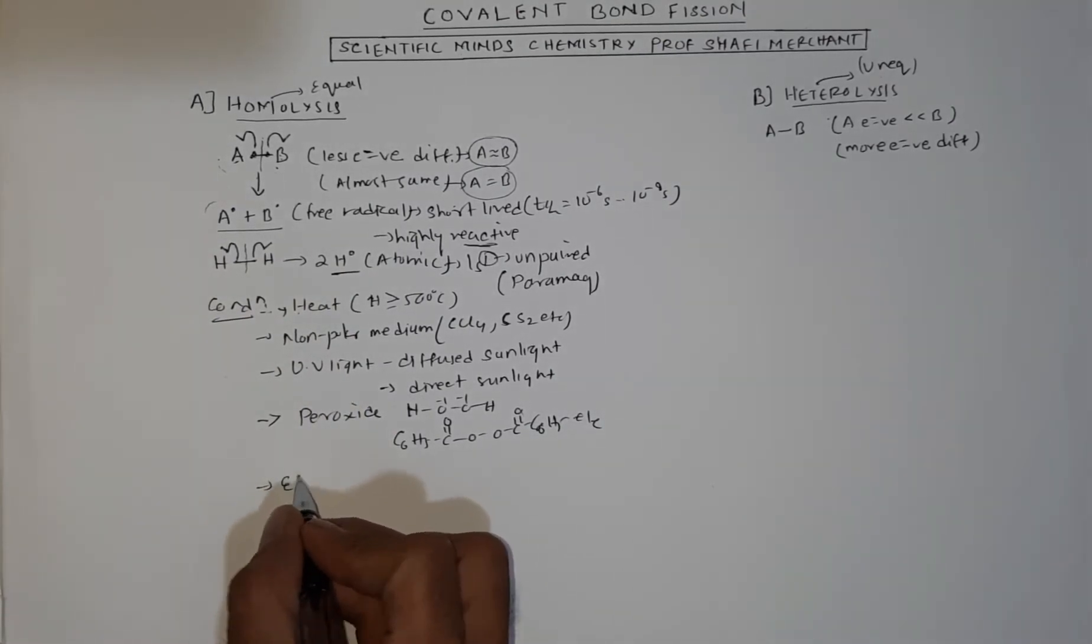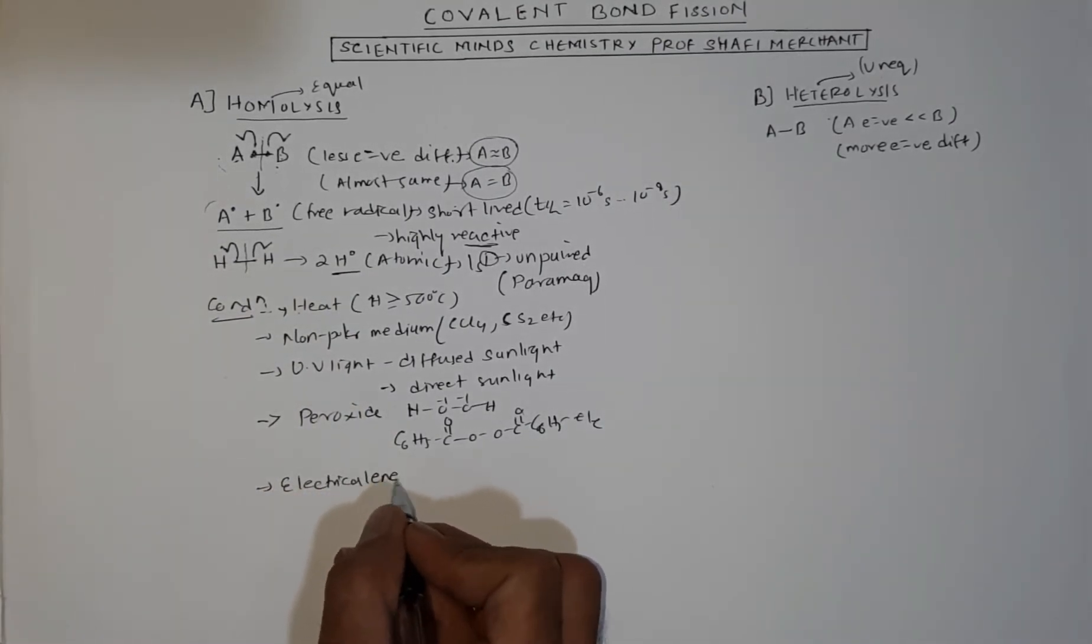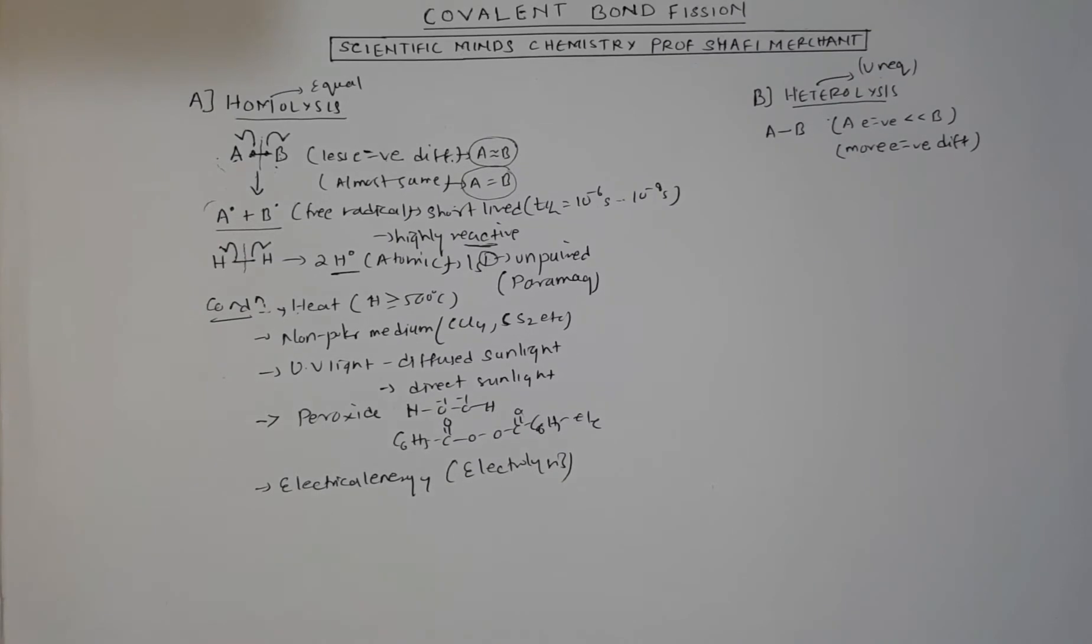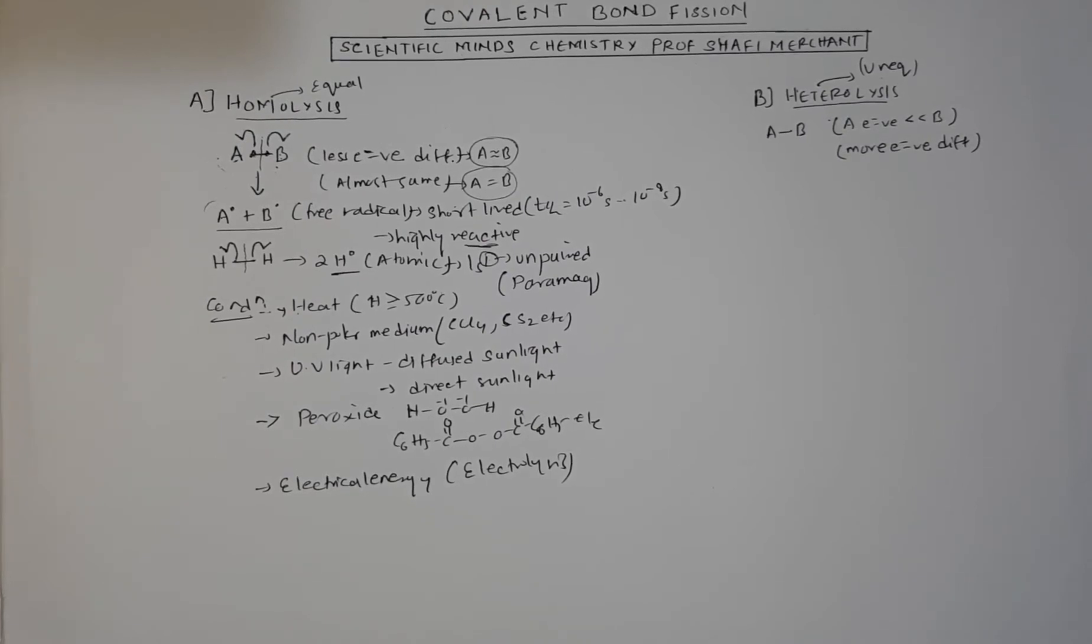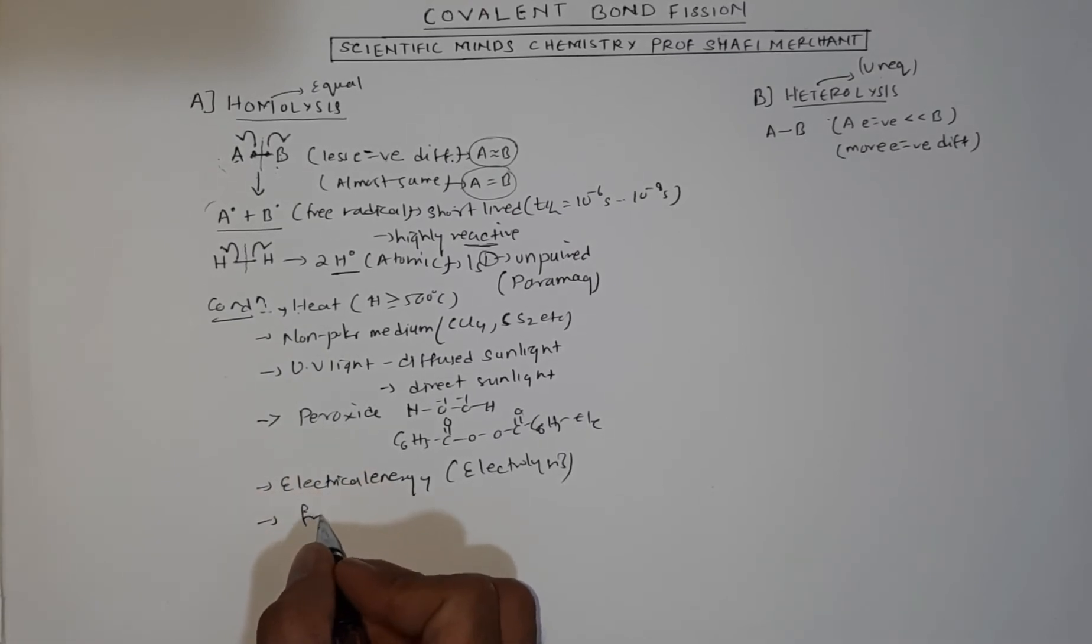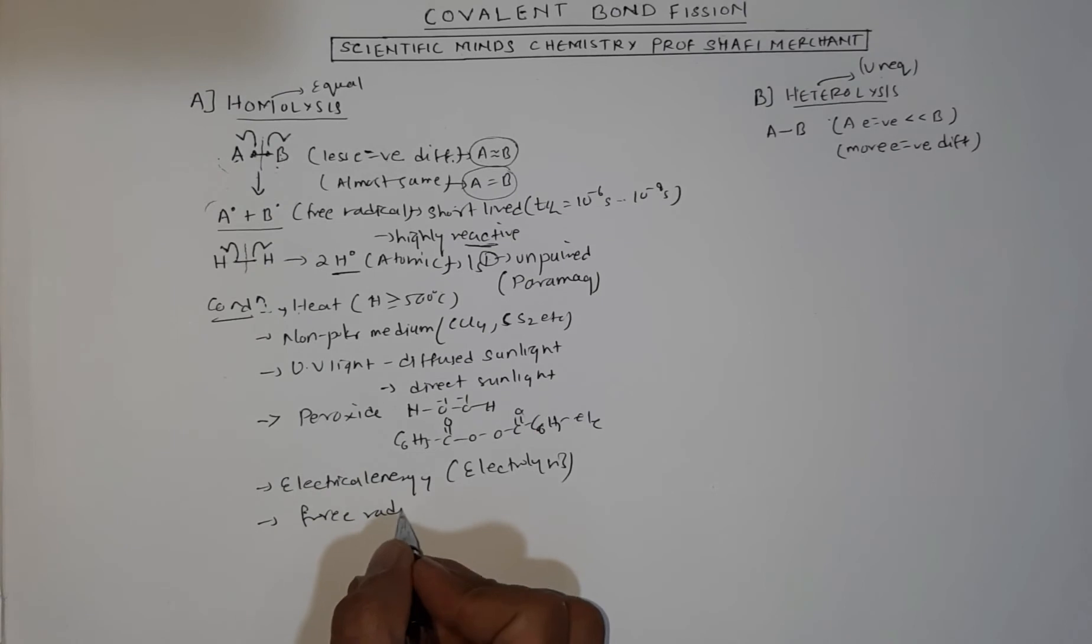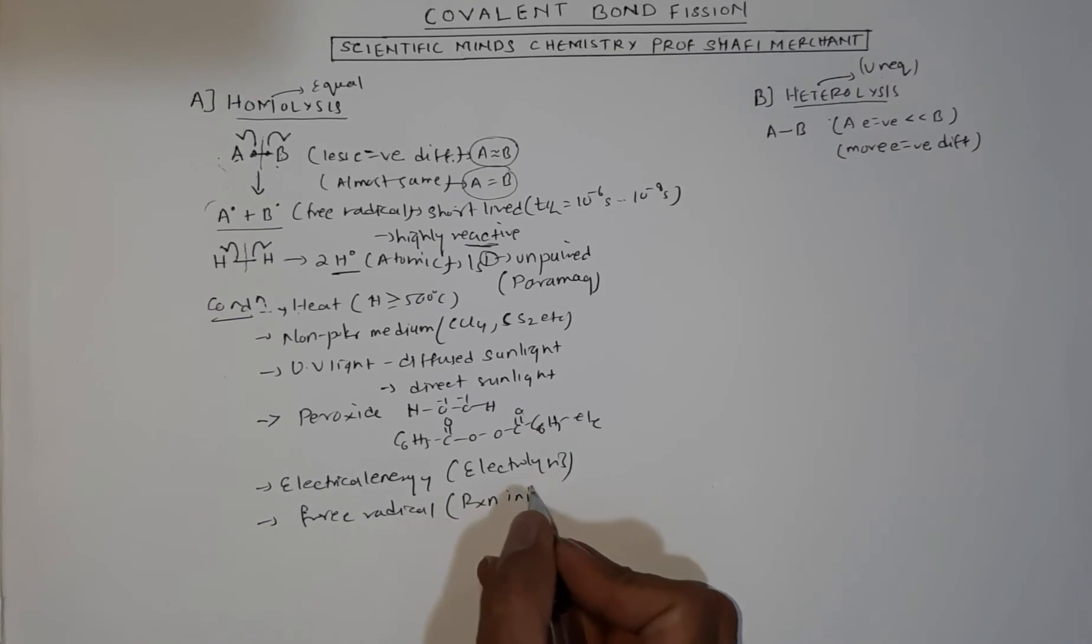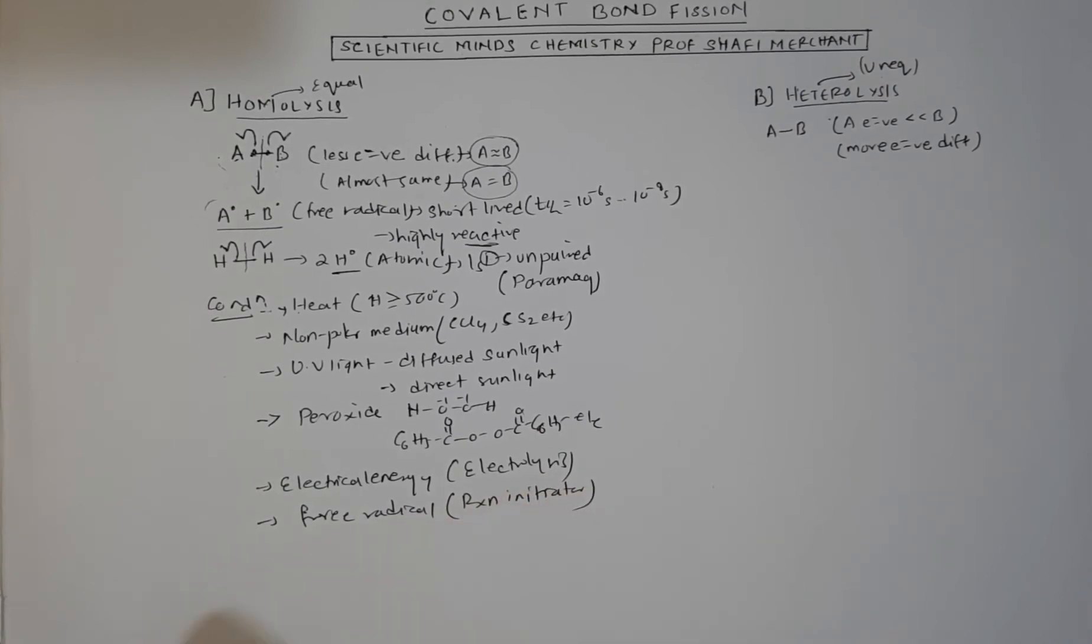So if peroxide is present, homolysis is possible. Or the condition could be electrical energy. You've heard about electrolysis. In electrolysis reactions, first free radical forms. Free radical mechanism works like in Kolbe's electrolysis. Or sometimes you can also directly add another free radical to the system.